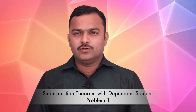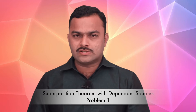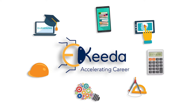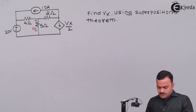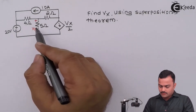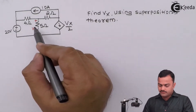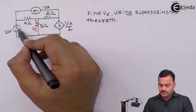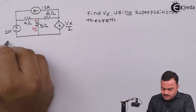In this video we are going to see how to apply superposition theorem in a circuit which consists of dependent as well as independent sources together. In this problem, Vx is maintained across 5 ohm and we are supposed to get it using superposition theorem. Based on this Vx, there is a voltage-dependent current source present in the circuit along with two independent sources.